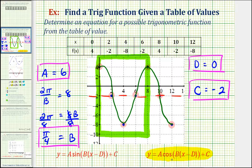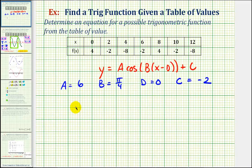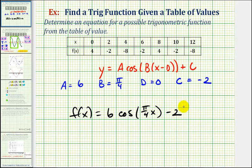And this is all we need to determine our cosine function for the table of values. Our function will be f of x equals 6 times cosine pi divided by 4. Again, since d is equal to 0, we just have times x, and then minus 2. This would be a possible trig function based upon the table of values.